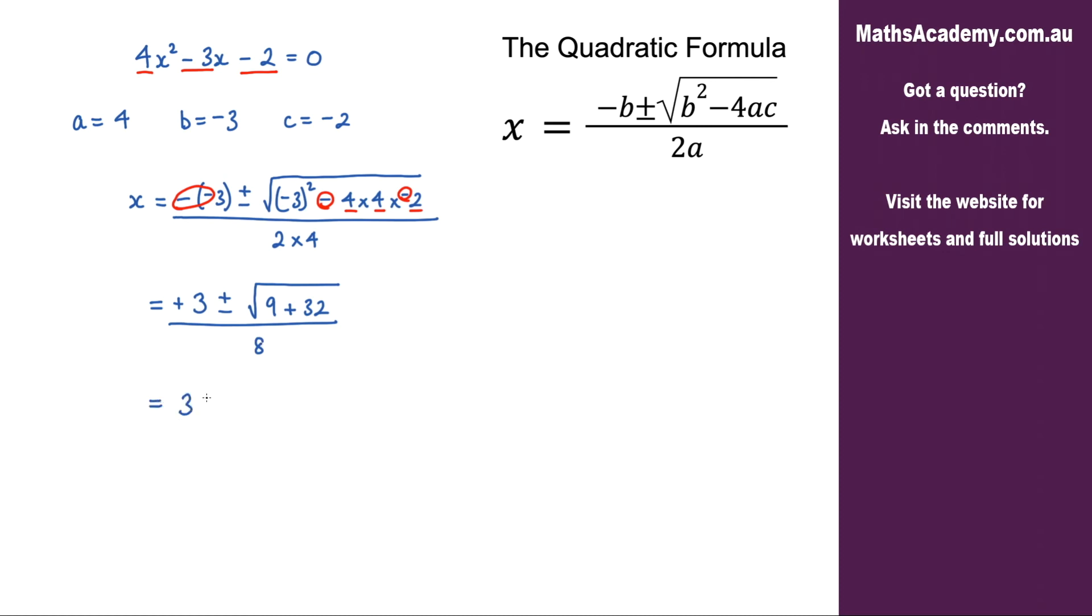So we have 3 plus or minus the square root of 41 over 8.